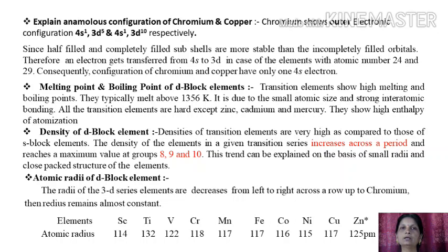Now let us discuss the next point: melting point and boiling point of d-block elements. Transition elements show high melting and boiling points. They typically melt above 1356 K. It is due to small atomic size and strong interatomic bonding. All transition elements are hard except zinc, cadmium, and mercury. The last element in all the series is not hard compared to other elements in the transition series. They show high enthalpy of atomization.